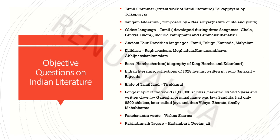Bana Bhatta, also called Bana, was associated with King Harsha and he wrote a biography in Kadambari. Regarding Indian literature, the Rig Veda is a collection of 1028 hymns written in Vedic Sanskrit. If anyone asks about the world's oldest or India's oldest text, that is the Rig Veda. It has 10 Mandalas. This is a very important question that can be asked from the Rig Veda.